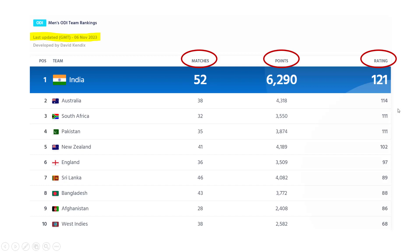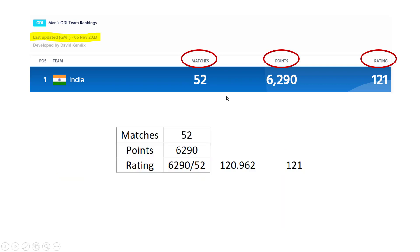What is the relationship between matches, points, and rating? It's very simple. For India: 52 matches, 6290 points. If you divide points by matches you get 120.9, and rounding off you get 121 — which is actually the rating of the Indian team.